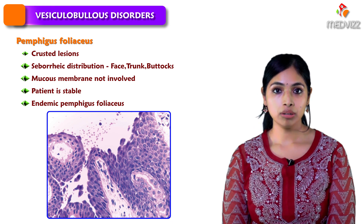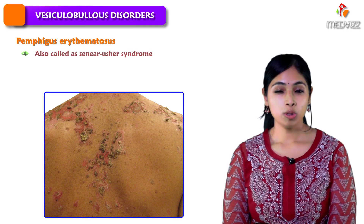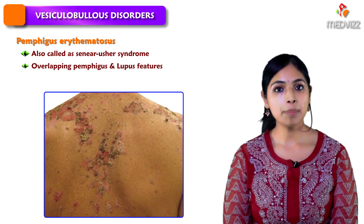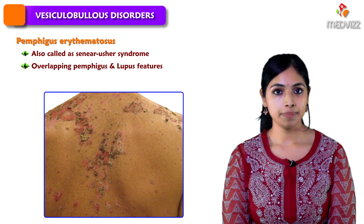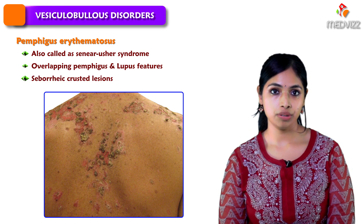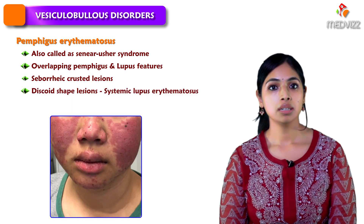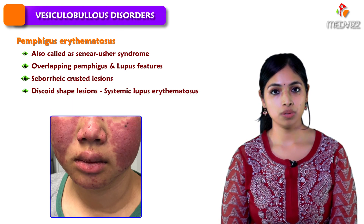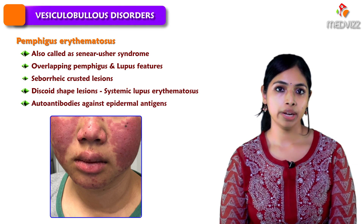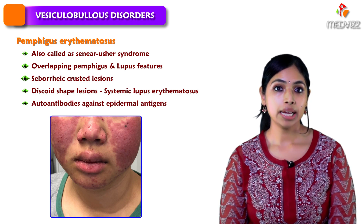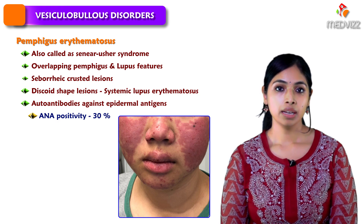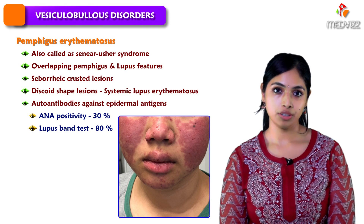The next entity is Pemphigus erythematosus, also known as Senear-Usher syndrome. In Pemphigus erythematosus, there is an overlap of Pemphigus features as well as lupus erythematosus. The patient may have seborrheic crusted lesions symmetrically distributed along with discoid-shaped lesions seen in lupus erythematosus. Immunologically, autoantibodies directed against epidermal antigens are seen, along with ANA positivity in 30% of patients and a positive lupus band test in about 80% of patients.